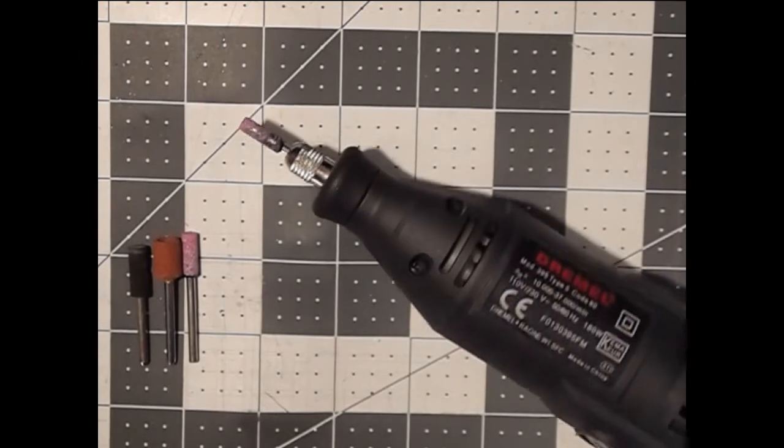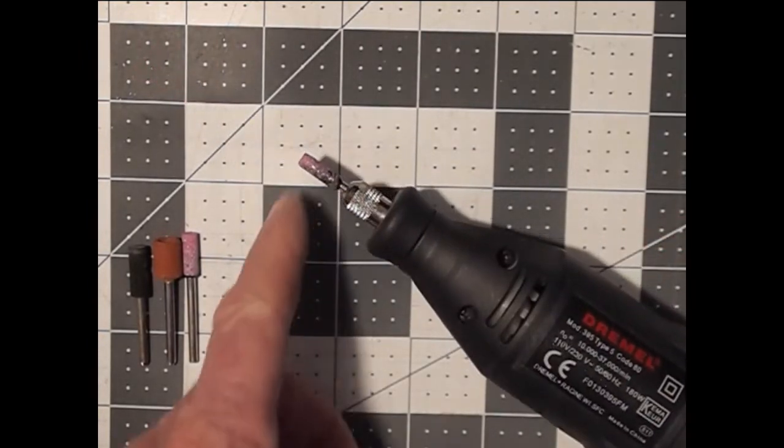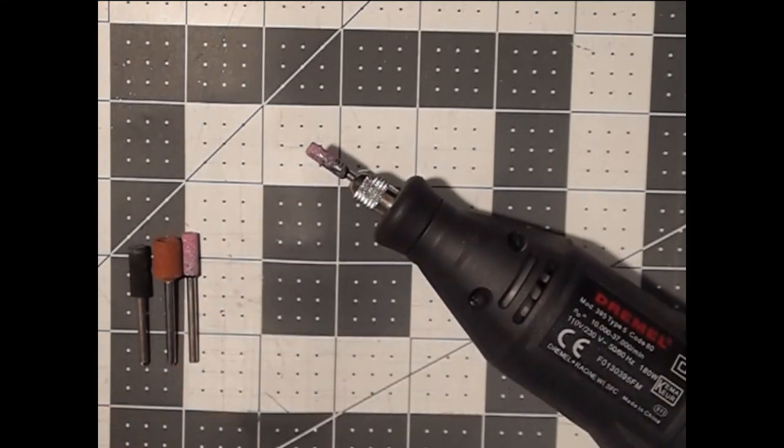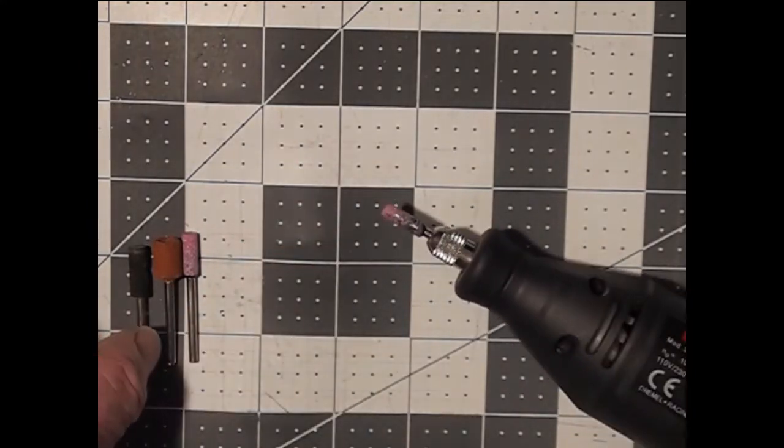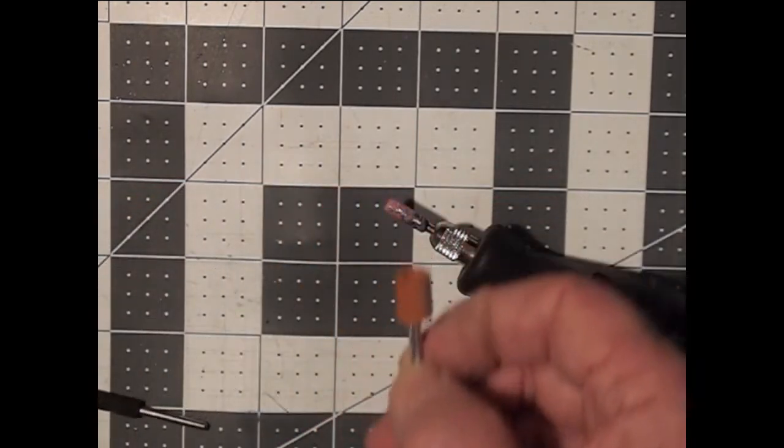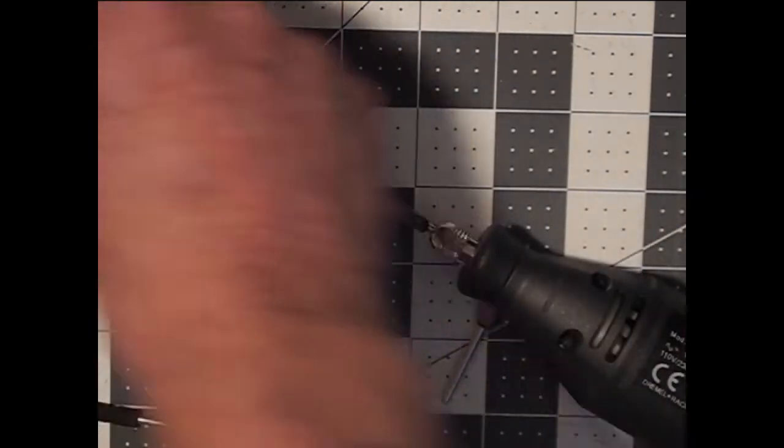For tools you're going to need something like this Dremel tool and what I've got here is a five or seven thirty-seconds chainsaw sharpening bit. However any of these types of bits, this one's probably going to be too big to fit in there.